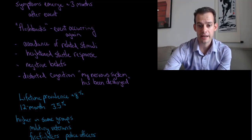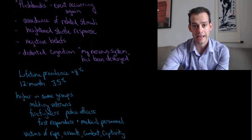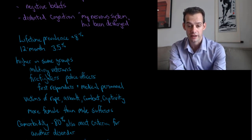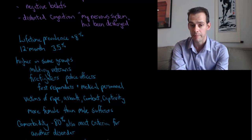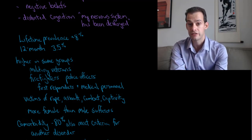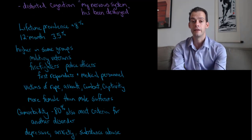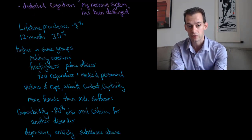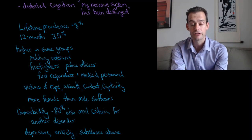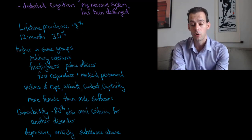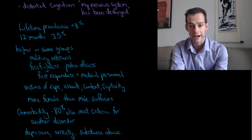The estimated lifetime prevalence of PTSD is about 8%, with a 12-month estimated prevalence of 3.5%, meaning about 3.5% of the population is suffering from this disorder in any given year. Prevalence is higher in some groups, including military veterans, firefighters, police officers, and first responders or other medical personnel who are more likely to be exposed to traumatic or very stressful events.